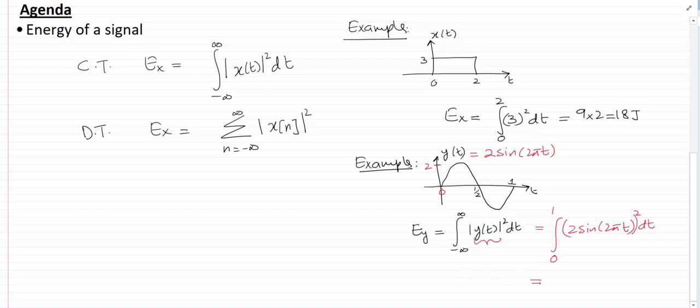And if I solve this integral, I'll get 0 to 1... Sorry, if I open this square term, I'll get 4sin²(2πt) dt.